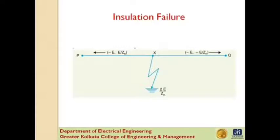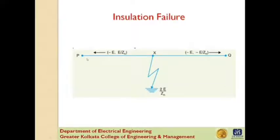Next is insulation failure. The most common case of insulation failure in the power system is the grounding of a conductor, which may cause overvoltages in the system. Suppose a line at potential E is earthed at point X. The earthing of the line causes two equal voltages of −E to travel along XQ and XP, containing currents of −E/Zn and E/Zn respectively. Both these currents pass through X to R, so the current to R is 2E/Zn.